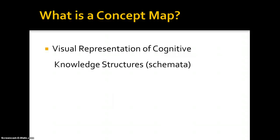So what is a concept map? You've seen one example. The idea is that it's a visual representation of our own cognitive knowledge structures. In other words, we organize information for ourselves in a vast network structure in our brains.